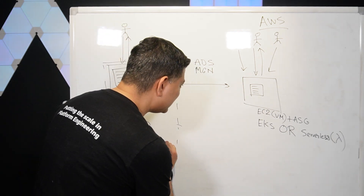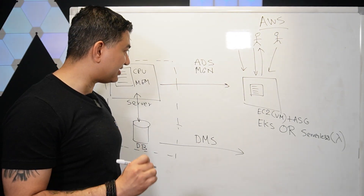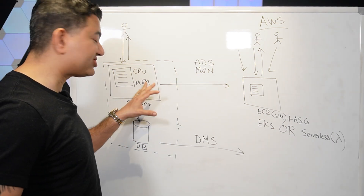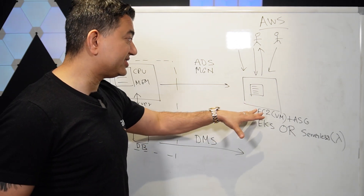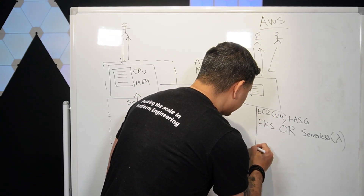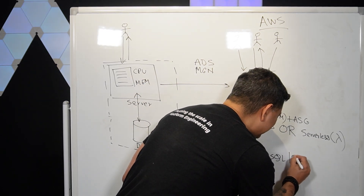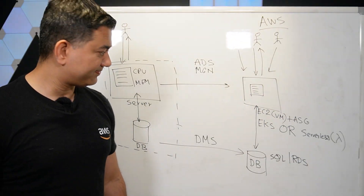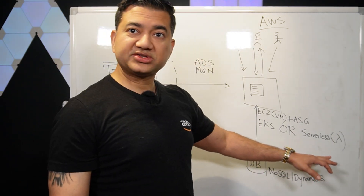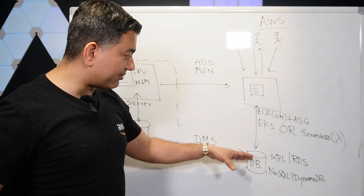To migrate the database, you need to learn DMS, or Database Migration Service. ADS discovers both servers and databases; MGN replicates the server with its hard disk (EBS), and the database is replicated through DMS — so the database comes to AWS. You need to know at least one SQL and one NoSQL database. For SQL, I recommend learning RDS. For NoSQL, I recommend DynamoDB. DynamoDB also goes very well with Serverless.